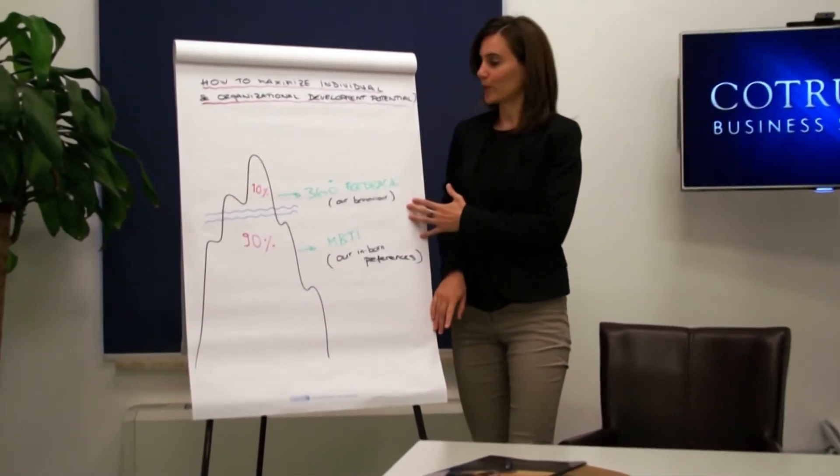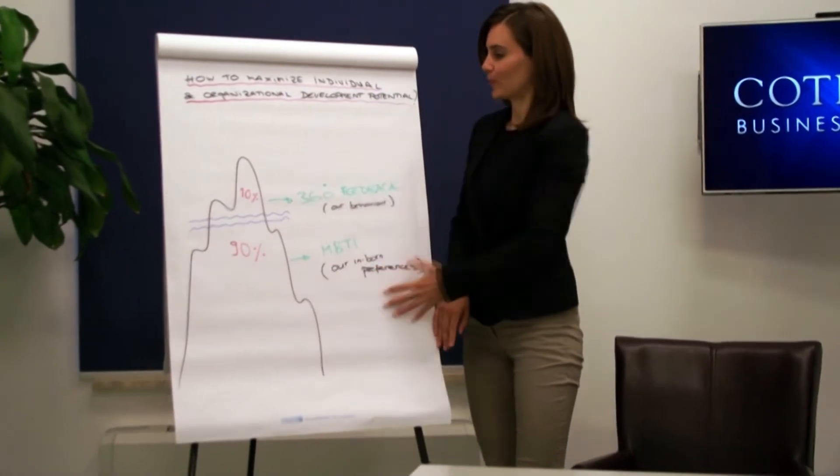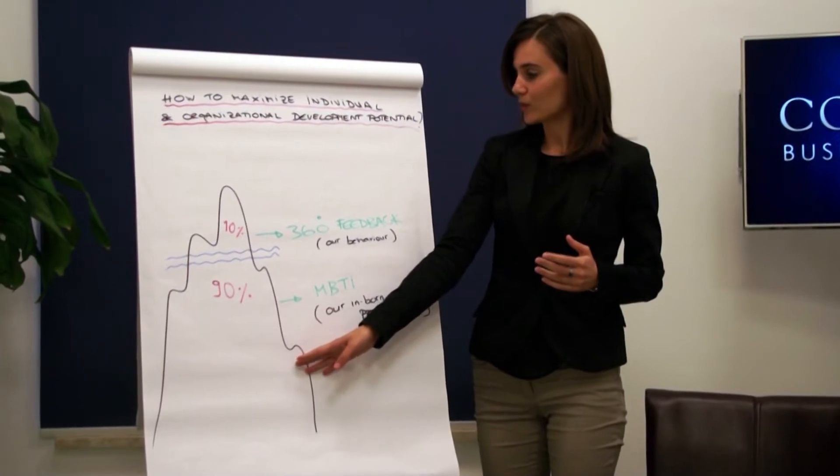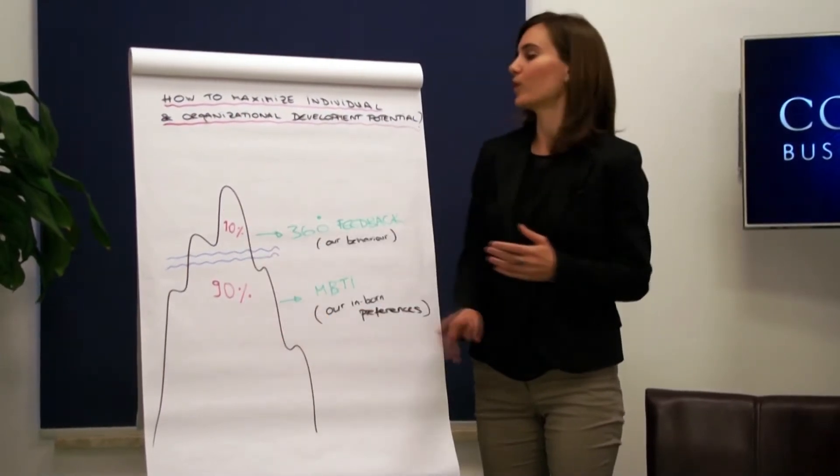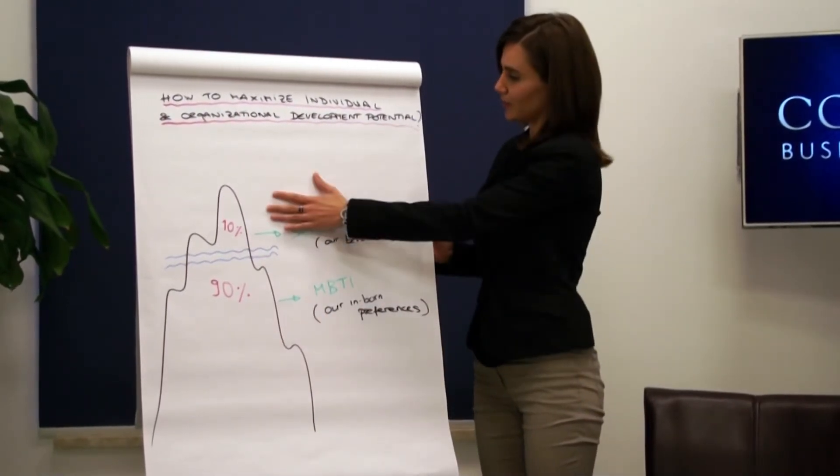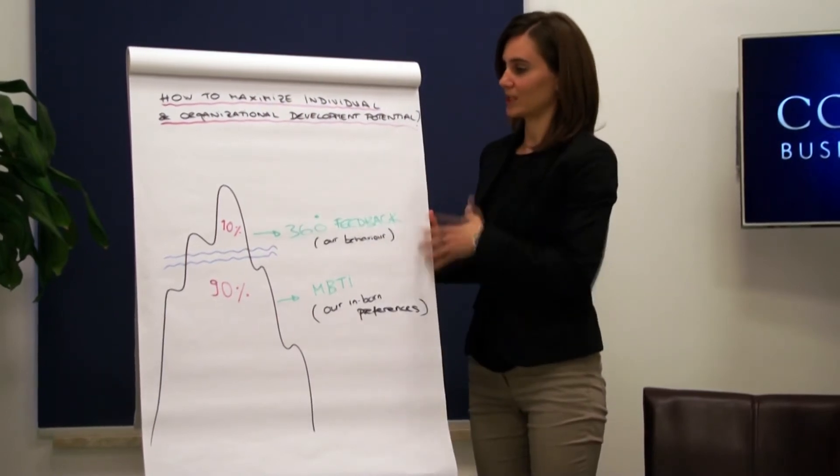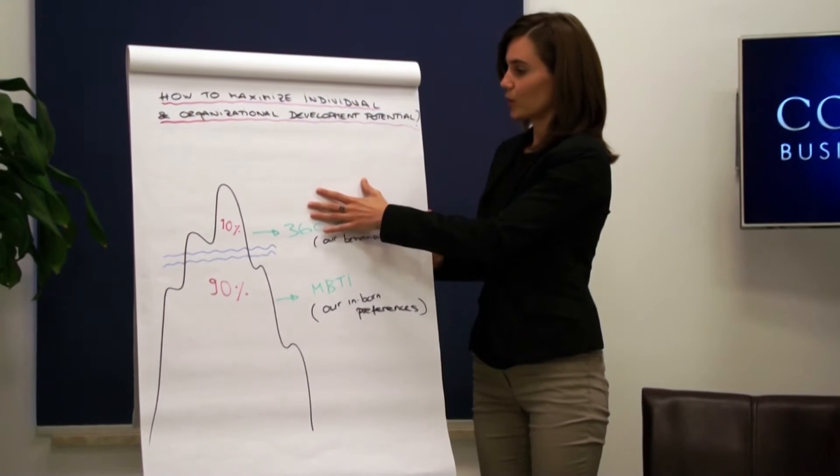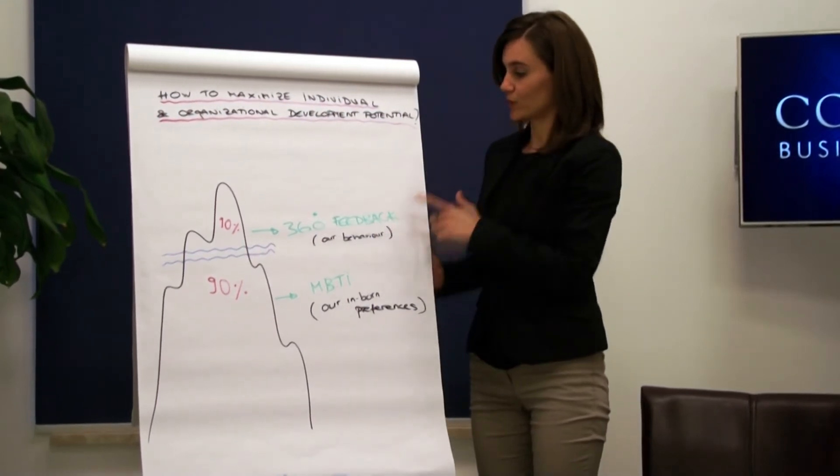Why the two? Because the two combined give the best insight into improving performance. If we take a look at the well-known iceberg metaphor, we know that the part above the surface is the thing that we can see, which we can observe and which we can measure. These are our behaviors and we are going to evaluate those by using the 360 feedback.